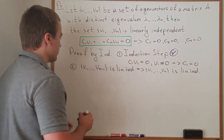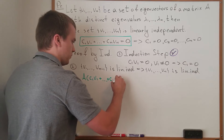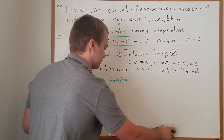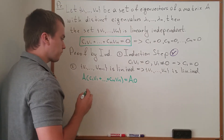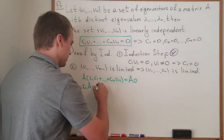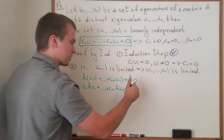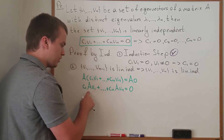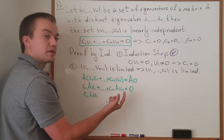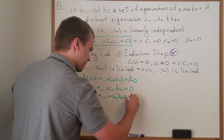Applying matrix A to both sides, I get A·(c1·v1 + ... + cn·vn) = A·0. Since the operation is linear, this becomes c1·(A·v1) + ... + cn·(A·vn) = 0, and any matrix times the zero vector is zero. Since each vector is an eigenvector, A·vi = λi·vi, so we get c1·λ1·v1 + ... + cn·λn·vn = 0.